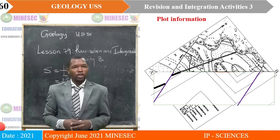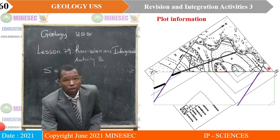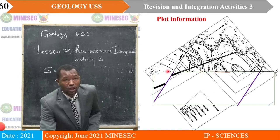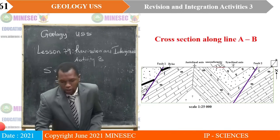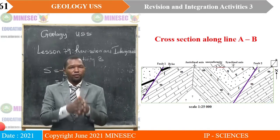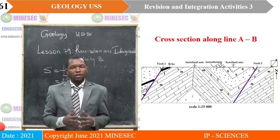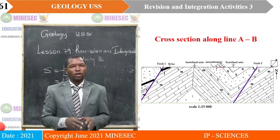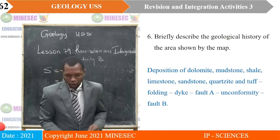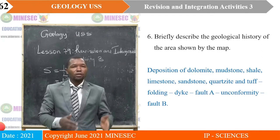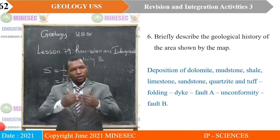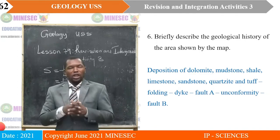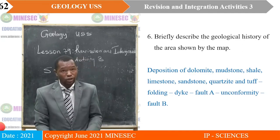To come up with our cross-section, put your section paper along the line of section from A to B, then track down the information — this is a syncline, this is an anticline, this is a dike, this is fault B, this is fault A. The resulting cross-section shows faults and all structures represented, with scale and north direction. The geological history: first, deposition of dolomite, mudstone, shale, limestone, sandstone, quartzite, and tuff; then folding; then the fault; then the dike; then fault A; then the unconformity; and then fault B — which is the last event because it is displacing the unconformity.